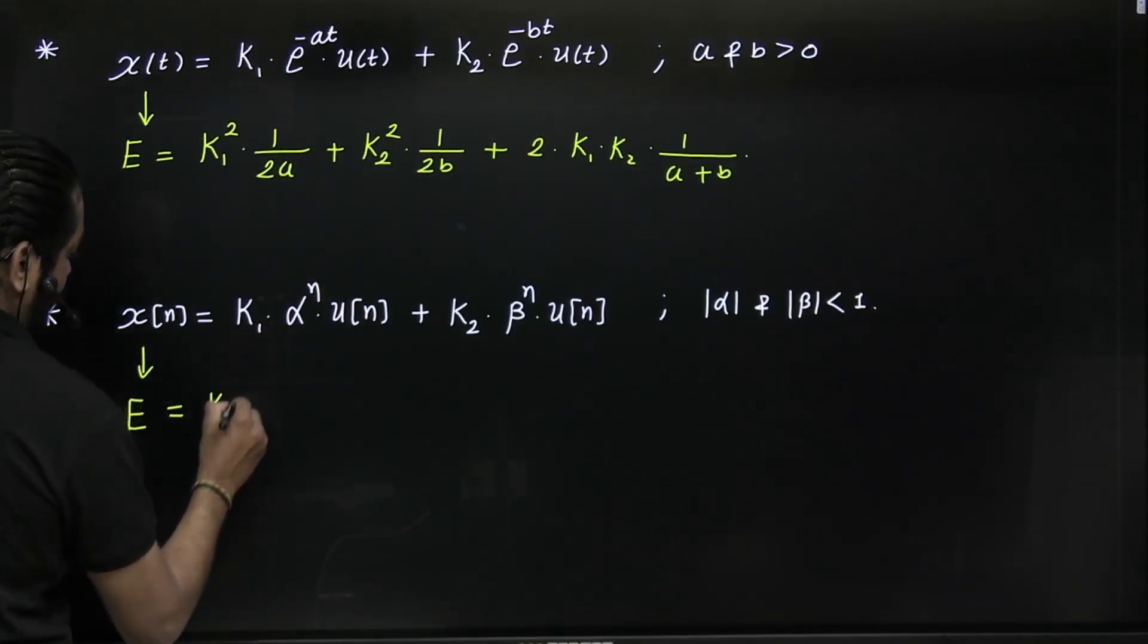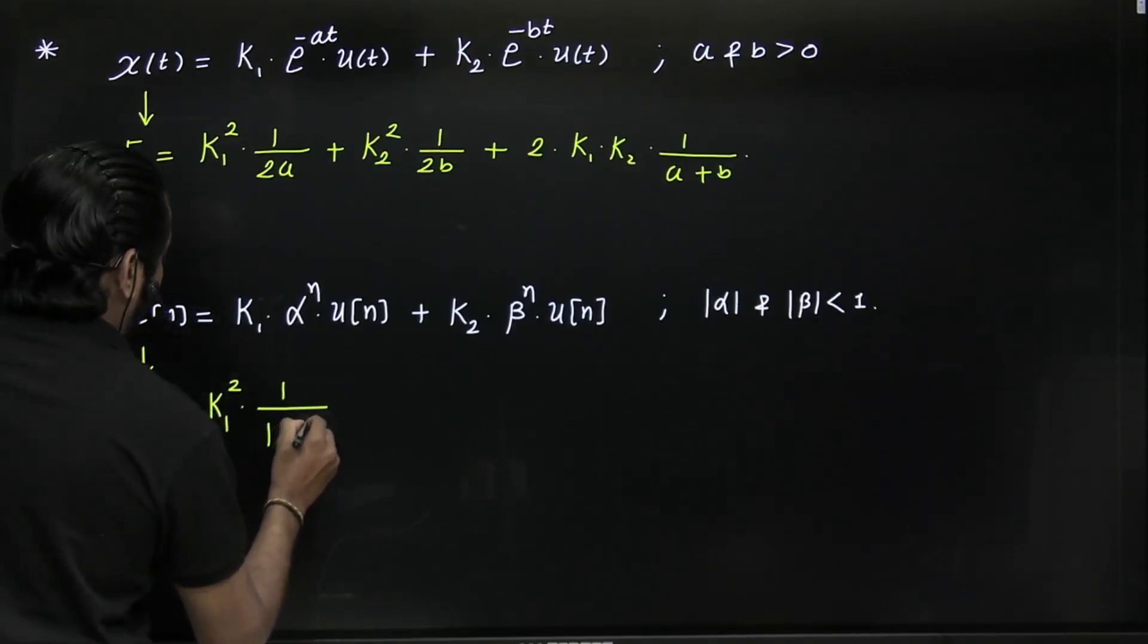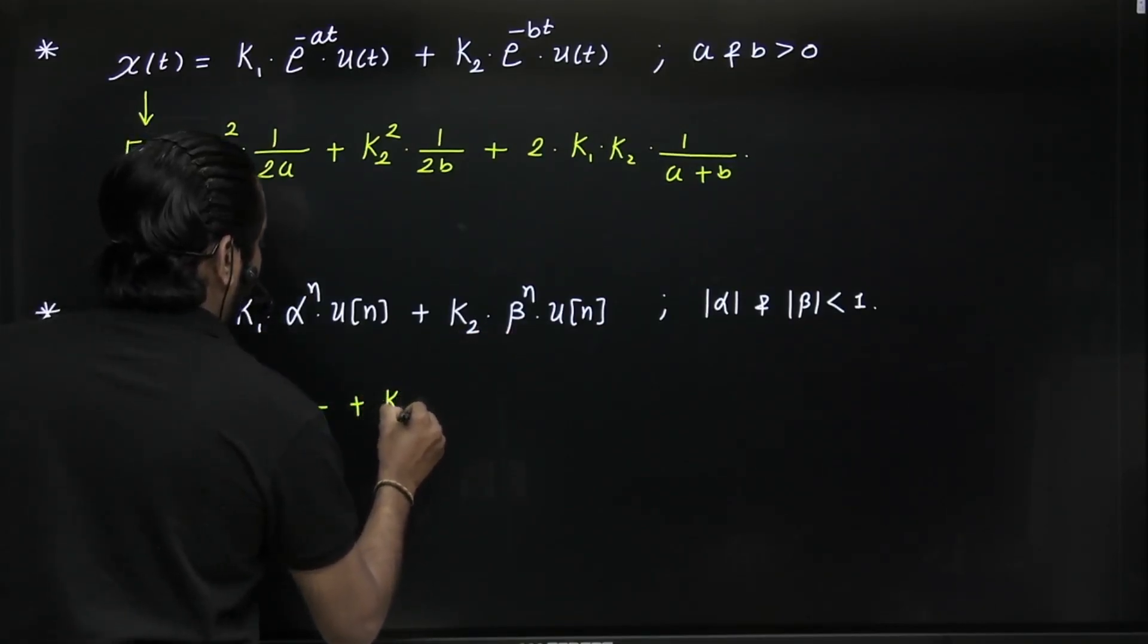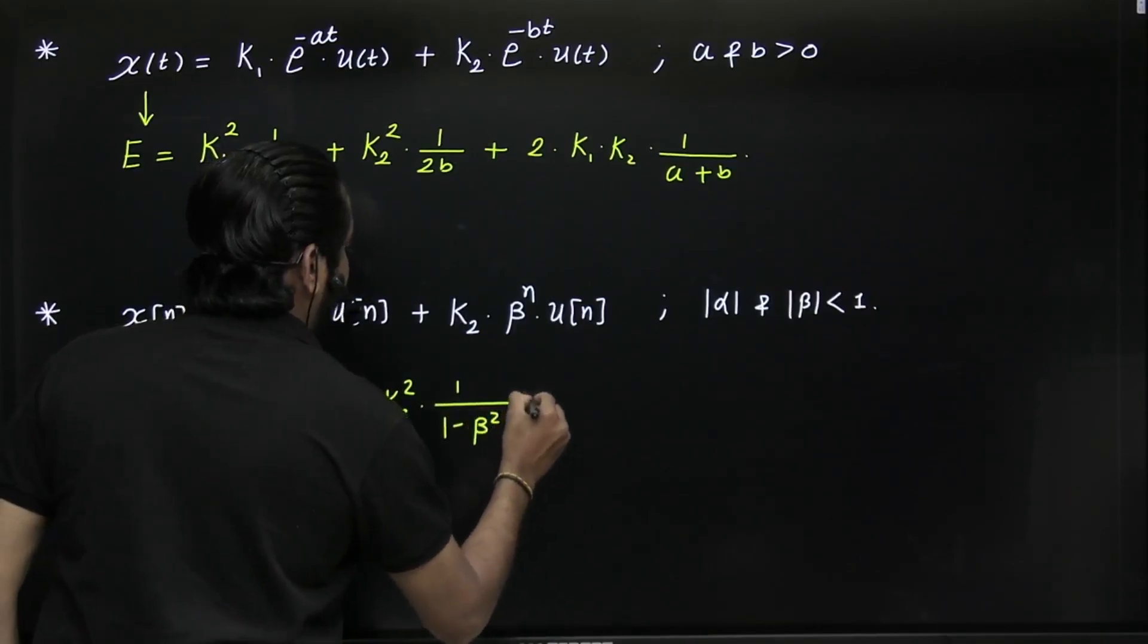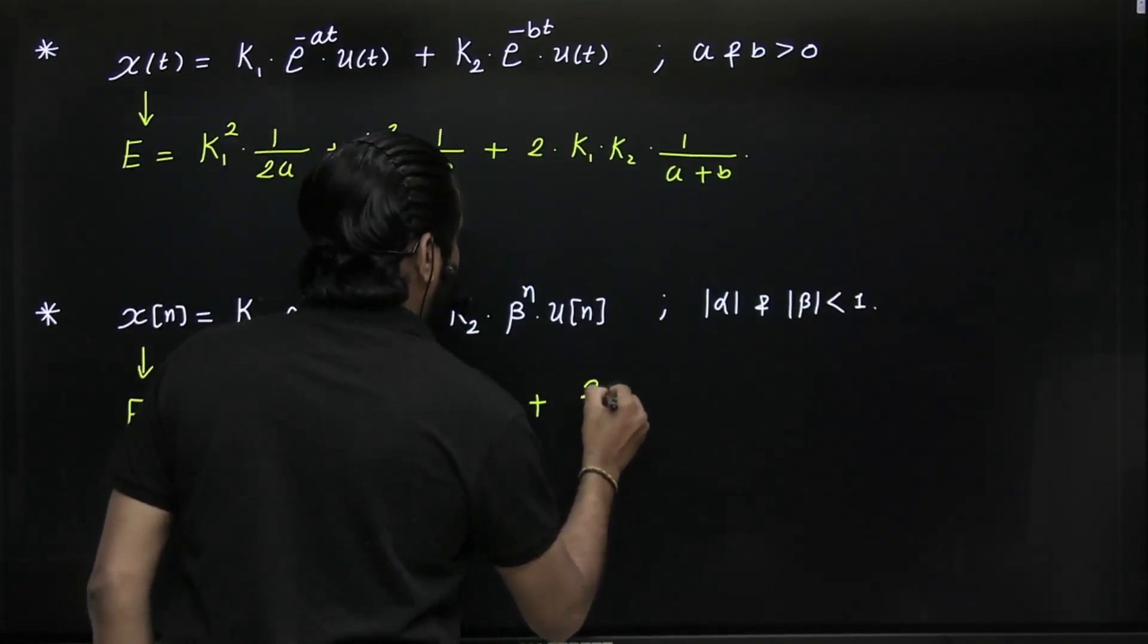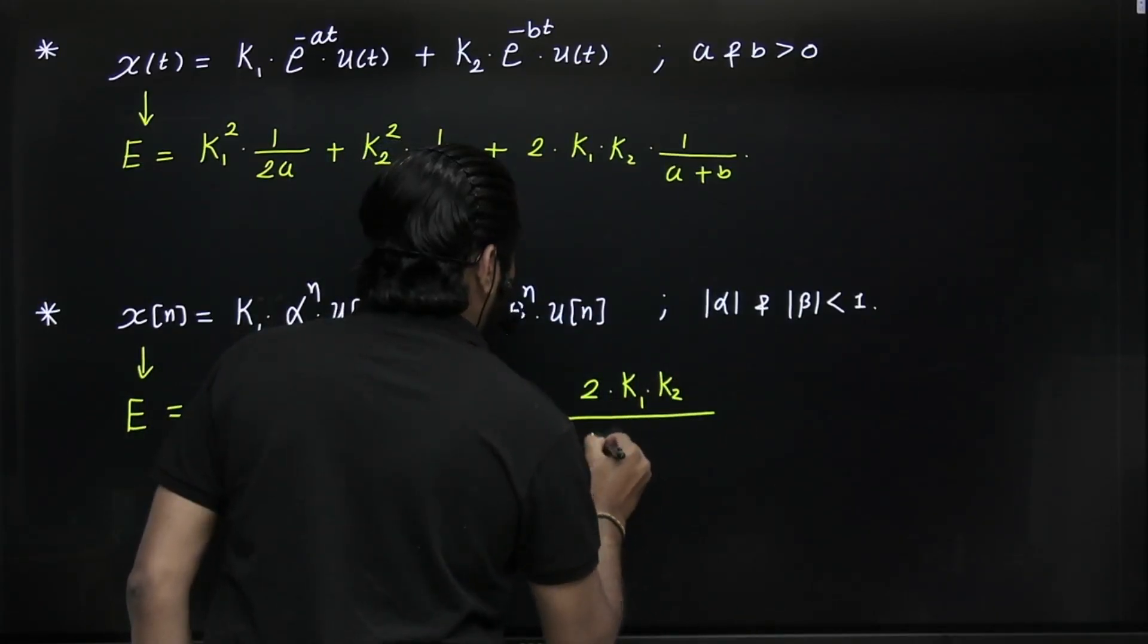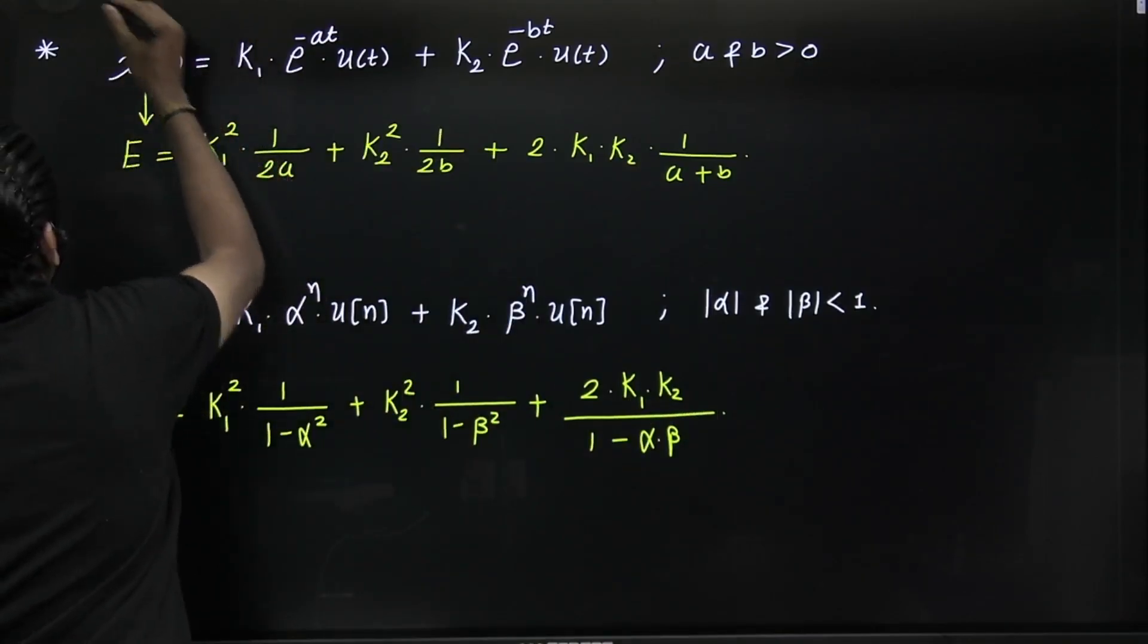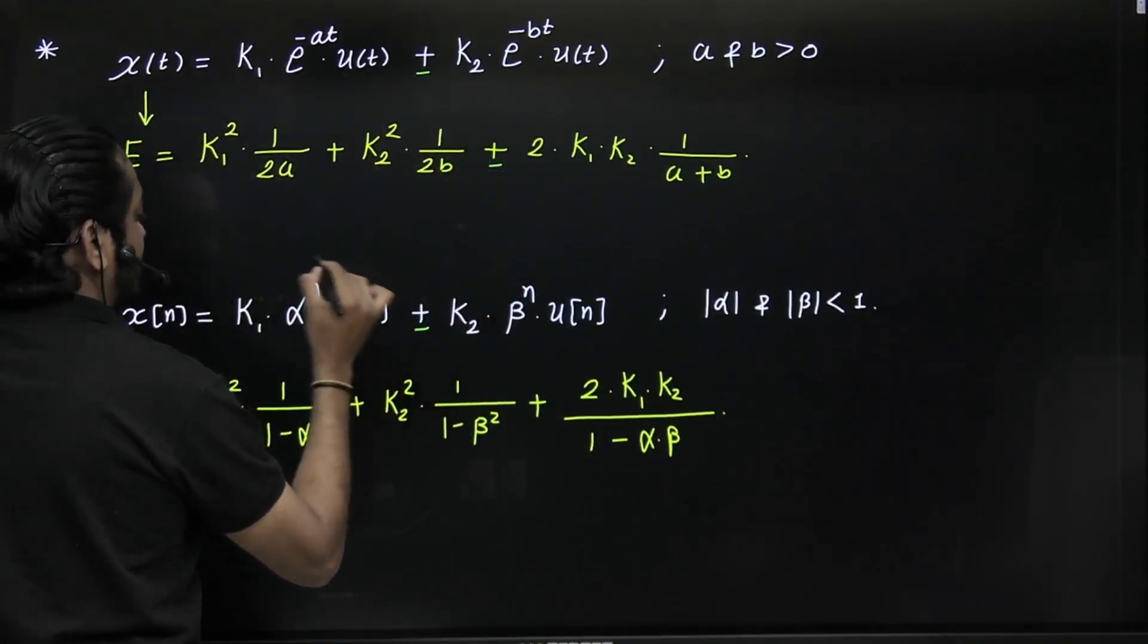given by E = k₁² × 1/(1 - α²) + k₂² × 1/(1 - β²) + 2k₁k₂/(1 - αβ). If there is a minus sign here, then minus sign here; if minus sign here,